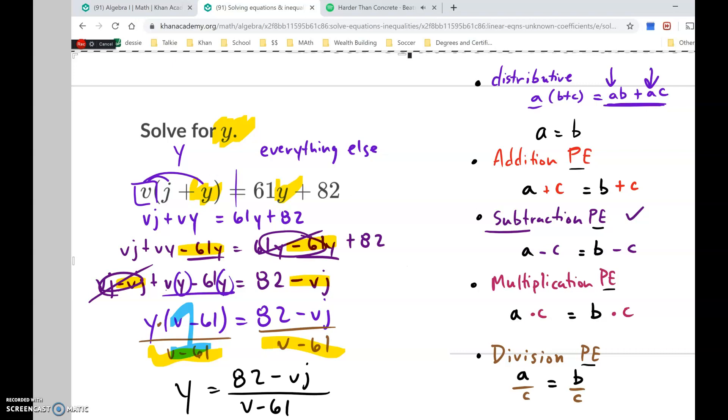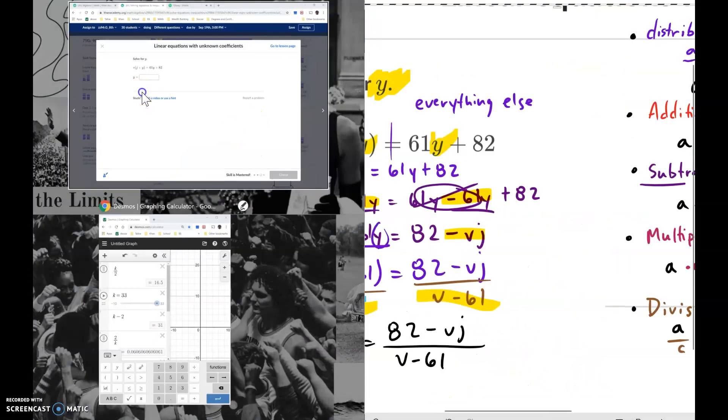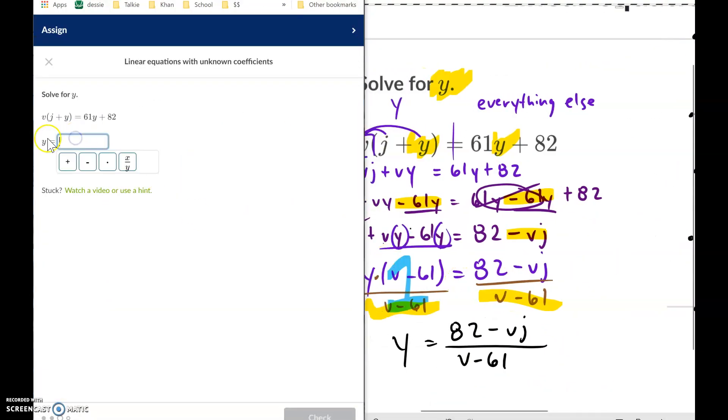Let's see if we're right here. Clip the clipboard in. And let's pop over to Khan. So y equals is already there for us. 82 minus vj. And all of that is divided by v minus 61. Wouldn't be terrible if I got this one wrong. But I did it. And that's how you solve linear equations with unknown coefficients.